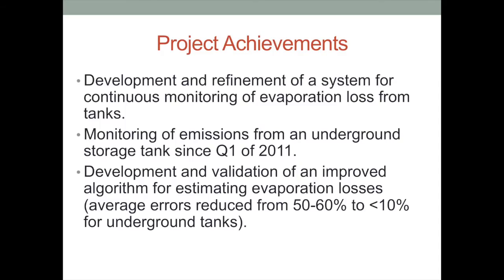The achievements to date include a refinement of the system we initially put on the underground storage tank at the retail service station to overcome some instrumentation issues and provide a more robust and easier-to-monitor array of sensors, which we are now installing on an above-ground storage tank. The above-ground storage tank is going in at a bulk fuel facility, which has a beta-root liquid-level monitoring system on that particular tank, just like the underground storage tank. They continuously measure both the liquid level and the product temperature in the tank so we can correct for thermal expansion and contraction of the fluid.